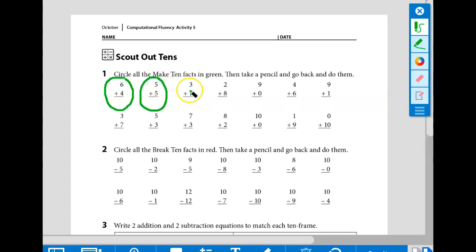You're going to look at every fact in number one, or every equation, and you're going to circle the facts that equal 10. Then you'll get out your pencil and you can solve these facts. 6 plus 4 equals 10. 5 plus 5 equals 10. Solve all the make 10 facts first. Then you can solve the rest of the equations.